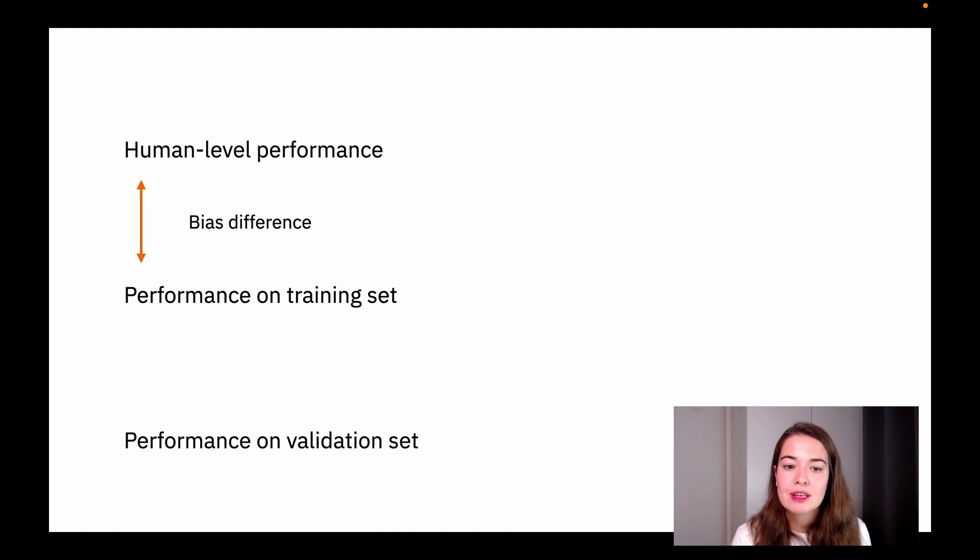So what does that mean? It's underfitting. And as we talked about, underfitting is caused by high bias. So basically, if you're not able to fit the data as well as you could have based on the human level performance, that means that you should lower your bias.